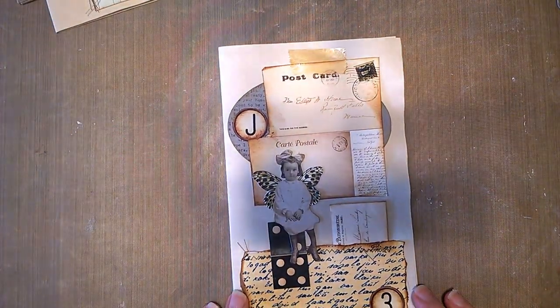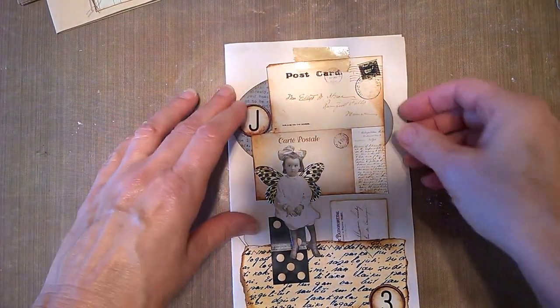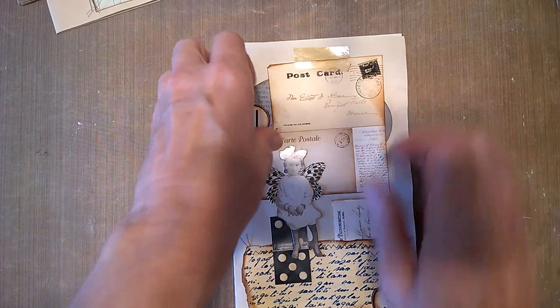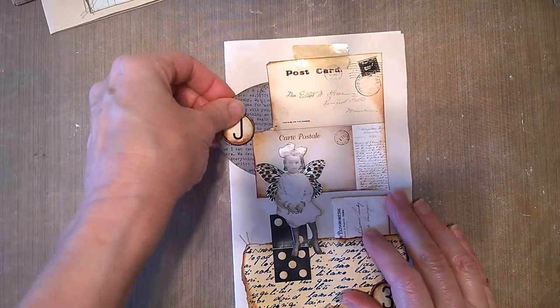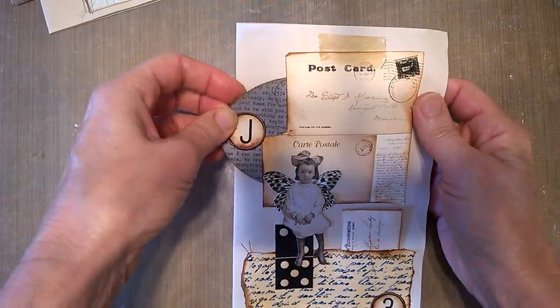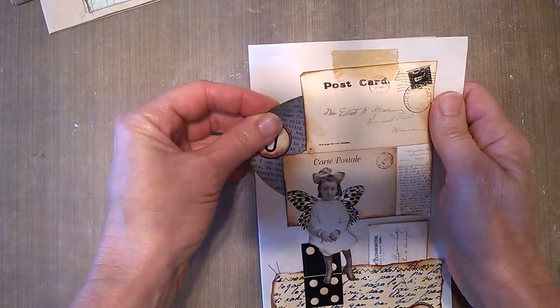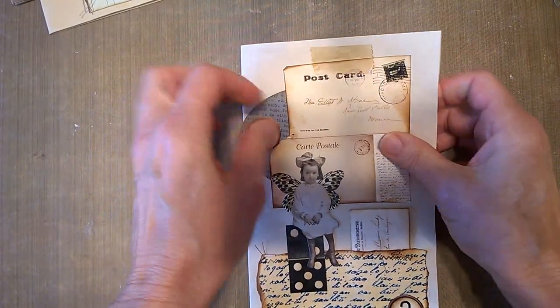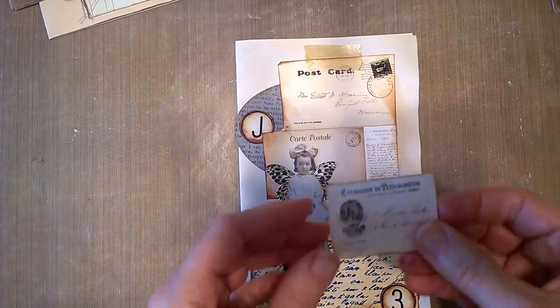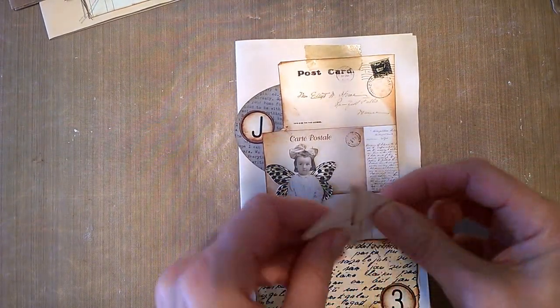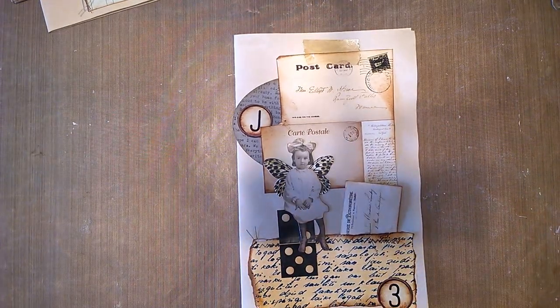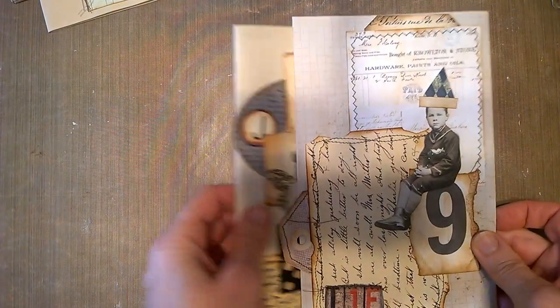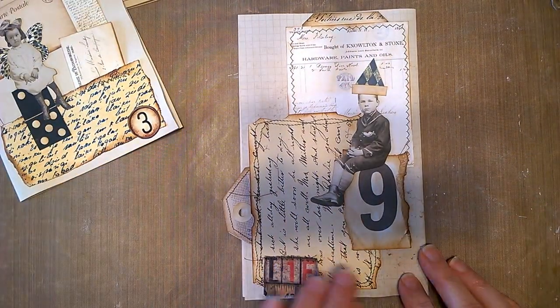Then I thought, well, I need to be a little bit more interactive. So I started, instead of sealing up the whole area, I started making places to put pockets in so that I can put ephemera in there, journaling cards or whatever can fit inside there. And another small envelope I tucked inside here. And another one here with this little guy sitting on a number.